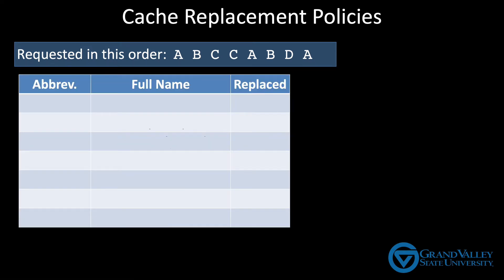Here are some of the common suggestions that students tend to come up with. We could use a FIFO algorithm. FIFO stands for first in, first out, which means when we have to kick something out, we kick out whatever's been there the longest — in this case, variable A.